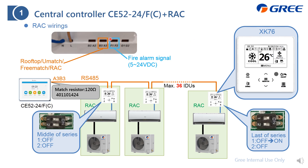As for F1 and F2, these are for the fire alarm signal. Which means once a fire alarm signal is received as input to the CE52, it will turn off all the online units.